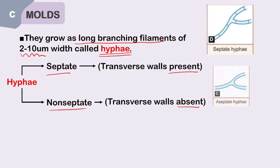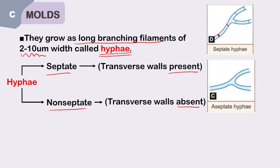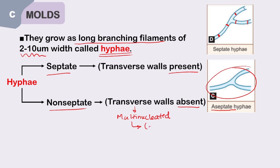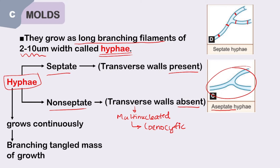From the image: septate hyphae have transverse walls visible; aseptate hyphae have no transverse walls, so the entire cytoplasm is continuous, giving a multinucleated appearance. This condition is given a special name: coenocytic. Hyphae grow continuously to form a branching, entangled mass of growth called mycelium.